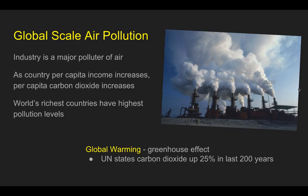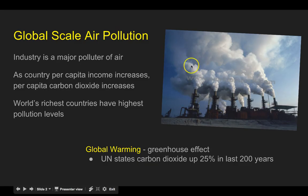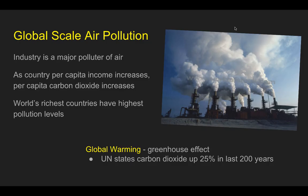Global scale air pollution. Rubenstein says that industry is the major polluter of air. If we look at this picture, this could be steam, but maybe it's smoke from burning particles. As a country's per capita income increases, per capita carbon dioxide also increases — meaning the more stuff you have as a developed country, the more carbon dioxide increases. The world's richest countries have the highest pollution levels. Again, this is from the textbook, not from me personally.